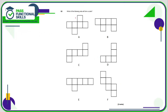Question three: which of the following nets will form a cube? The first thing to do is check that they are all made up of six squares. We can see they're all squares — one, two, three, four, five, six. One, two, three, four, five — we can't make a cube with five. This one has six and this one has six as well. The standard nets have four cubes in a line with one above and one below, so net A works.